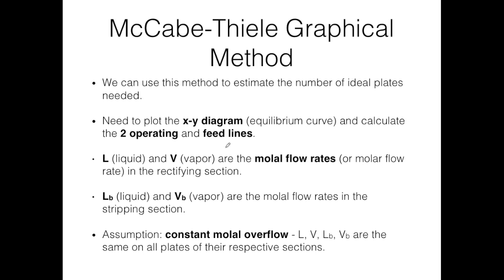A few definitions: like in the absorption column, L stands for liquid and V for vapor, and these are in mole flow rate units — moles per time. L and V are used for the rectifying section. For the stripping section, we use LB and VB, which are still liquid and vapor in mole flow rates. One key assumption for the graphical method is that the molar flow rates are constant — meaning L, V, LB, and VB are the same on all plates, irrespective of location in the column.